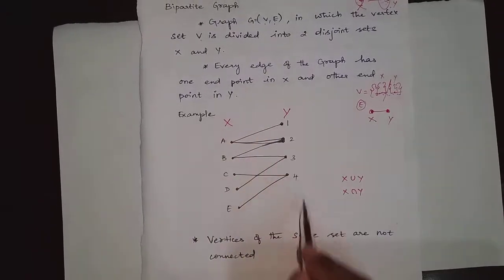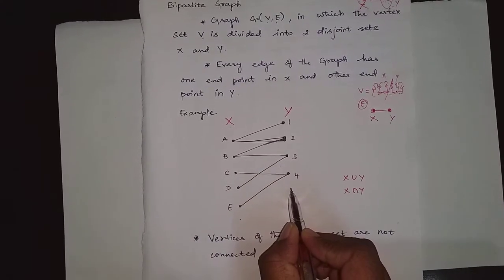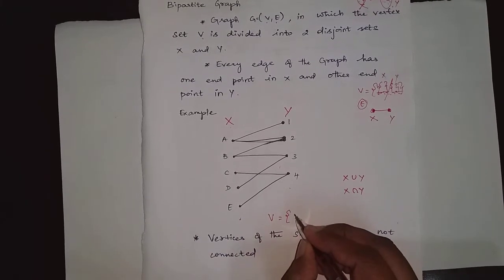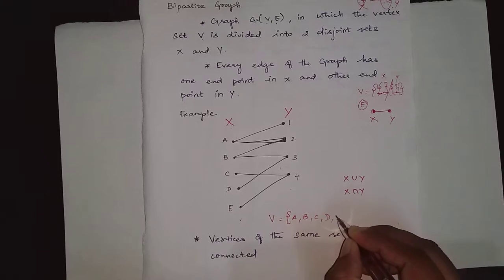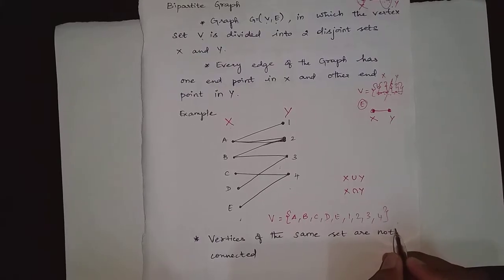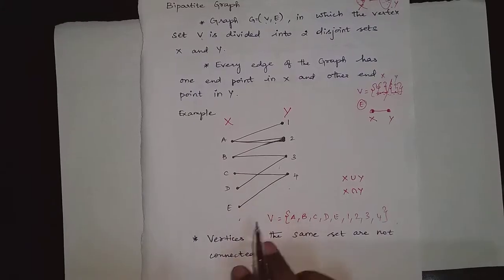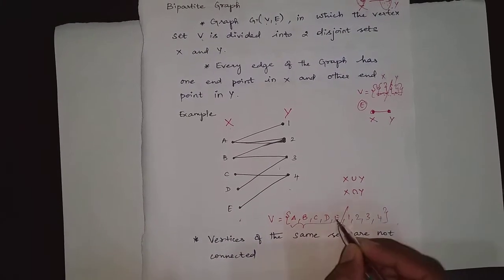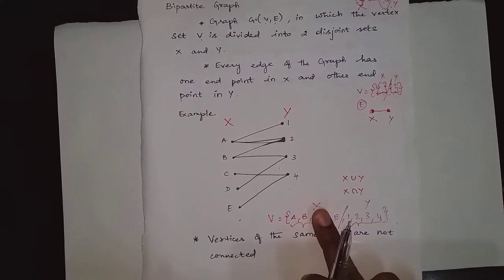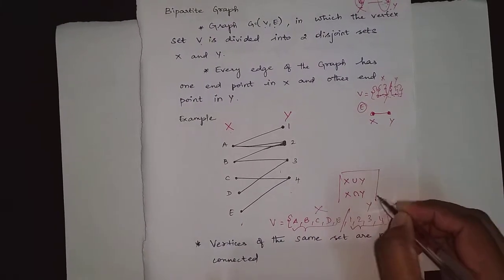Consider this example: set X contains five vertices — a, b, c, d, e — and set Y contains four vertices — 1, 2, 3, 4. As a whole, the vertex set V contains {a, b, c, d, e, 1, 2, 3, 4}. Since it is a bipartite graph, it is divided into two partitions: a, b, c, d, e in partition X and 1, 2, 3, 4 in partition Y. A vertex in X will not appear in Y.